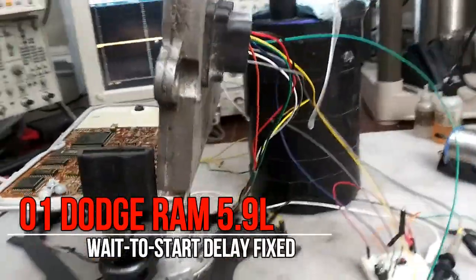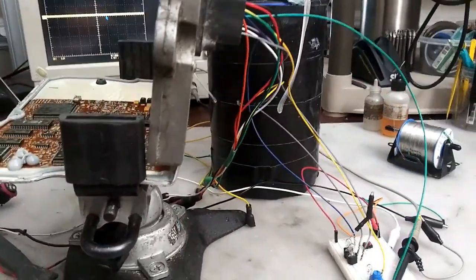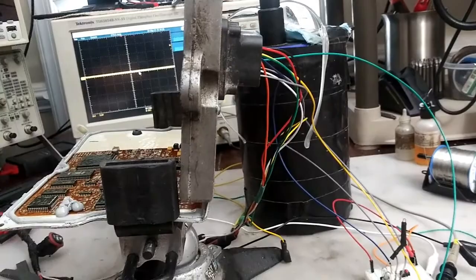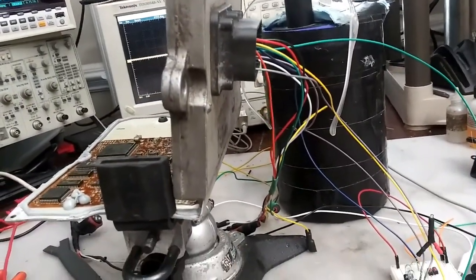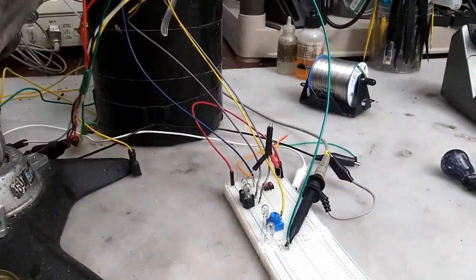So I have this 0159 Cummins ECU for a Dodge Ram that came in for delayed wait to start, which is a very common issue on these computers. I just wanted to demonstrate this real quick.